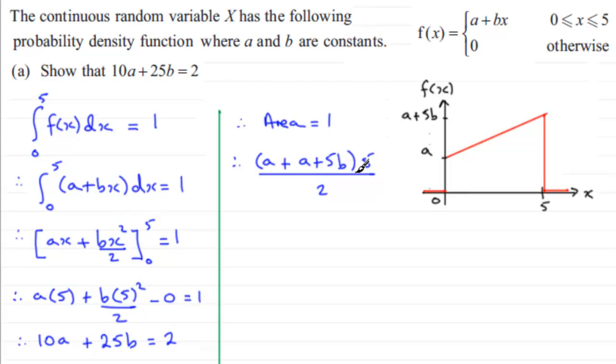That's the area of a trapezium and it equals 1 in this example. Now if I multiply both sides by 2 I've therefore got the 5 on the outside here of this bracket which is A plus A which is 2A plus the 5B and that's going to equal 2.